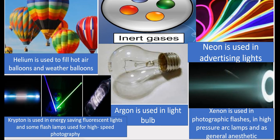Xenon is used in photography, in photographic flashes, in high-pressure arc lamps for motion picture projections, and in high-pressure arc lamps to produce UV light. Xenon is also used as a general anesthetic.